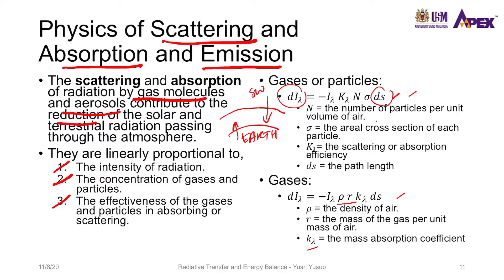Small k-lambda is the mass absorption coefficient. This equation reflects the linear proportionality of the three properties on scattering and absorption.